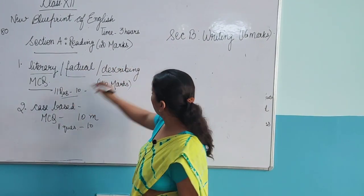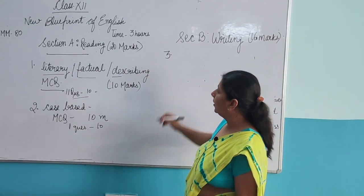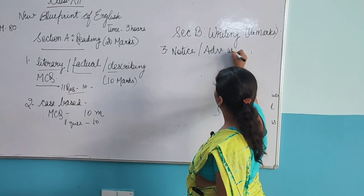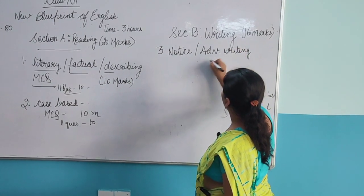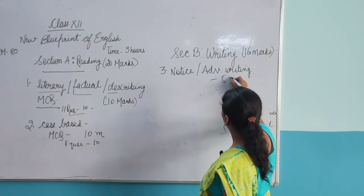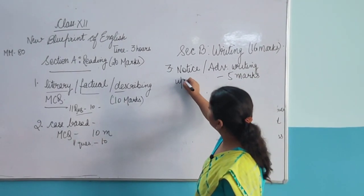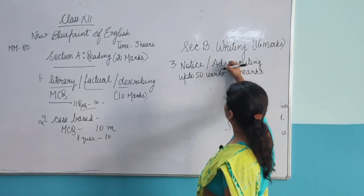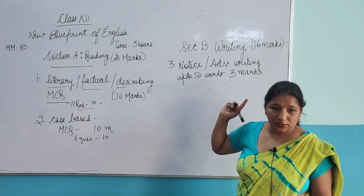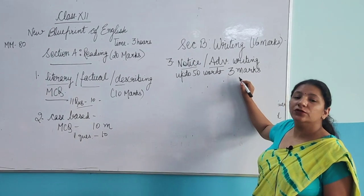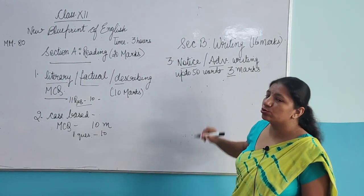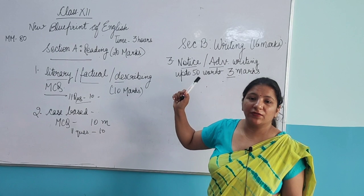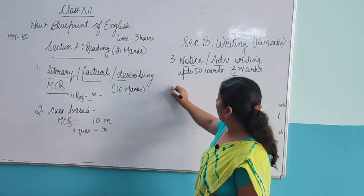The third question of your question paper will be notice or advertisement writing. It is of 3 marks — earlier it was 4 marks, now reduced to 3 marks — and you have to write up to 50 words. Two questions will be given: one notice and one advertisement, and you can do any one. The fourth question is invitations — formal or informal — and can also be replies to formal or informal invitations. Two questions based on invitations will be given; you have to do any one. Again 3 marks, up to 50 words. Both are of 3 marks, with distribution: Format 1 mark, Content 1 mark, Expressions 1 mark.